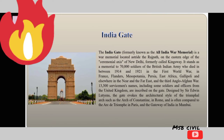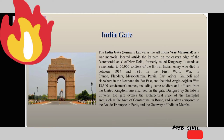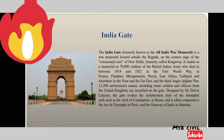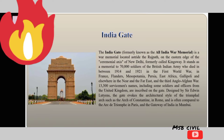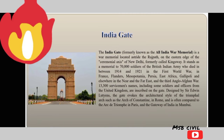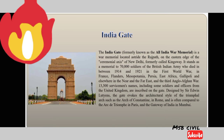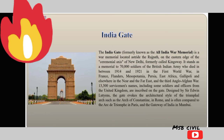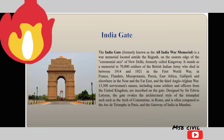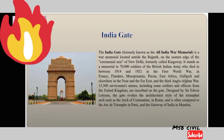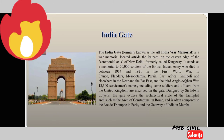India Gate, formerly known as the All India War Memorial, is a war memorial located at the Rajpath on the eastern edge of the ceremonial axis of New Delhi. It stands as a memorial to 70,000 soldiers of the British Indian Army who died between 1914 and 1921 in the First World War in France, Flanders, and Mesopotamia. 13,300 servicemen's names, including soldiers and officers from the United Kingdom, are inscribed on the gate. Designed by Sir Edwin Lutyens, the gate evokes the architectural style of the Triumphal Arch, such as the Arch of Constantine in Rome, and is often compared to the Arc de Triomphe in Paris and the Gateway of India in Mumbai.